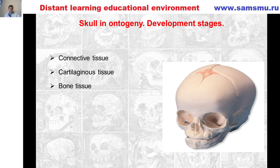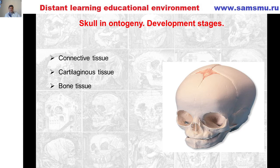Already in the membranous skull there are holes and channels for the passage of nerves and blood vessels, and in the future — the occipital bone forming. At eight to ten weeks of intrauterine development, ossification points appear in membranous centers. Bone tissue is formed, first as a coarse-fibered bone tissue.